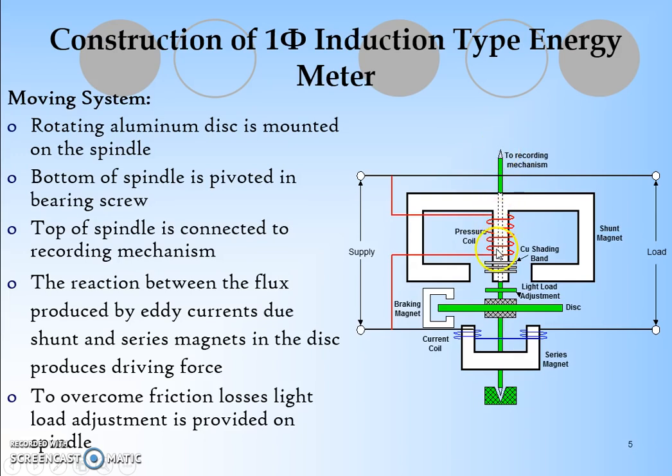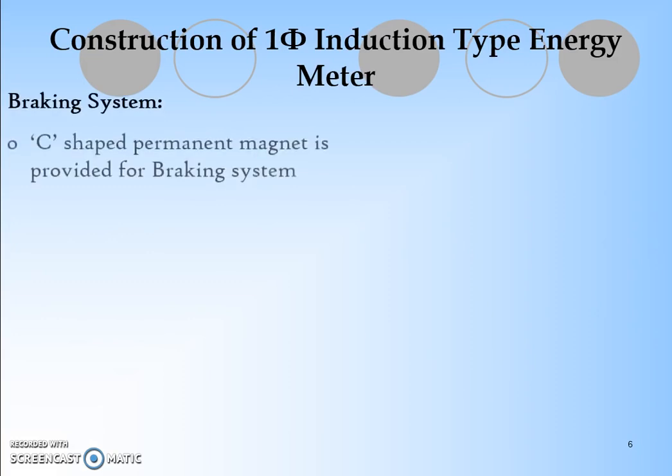The reaction between the flux produced by eddy currents due to shunt and series magnet makes the disc rotate. To overcome the friction loss, light load adjustment is provided on the spindle. We have provided this light load arrangement for reducing the friction losses.